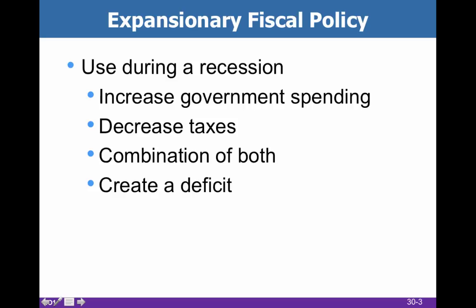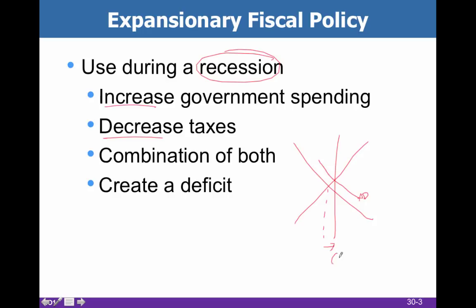During a recession, the government's idea is to increase spending or decrease taxes. By doing so, you'll increase aggregate demand in order to get yourself out of the recession. This is Q full employment, and by shifting aggregate demand to the right, that's what is going to push us out of the recession. It's also going to create a little bit more inflation because the price level is going up. You can do both — increase spending and decrease taxes — but you cannot increase taxes and increase spending because those two would cancel each other out.